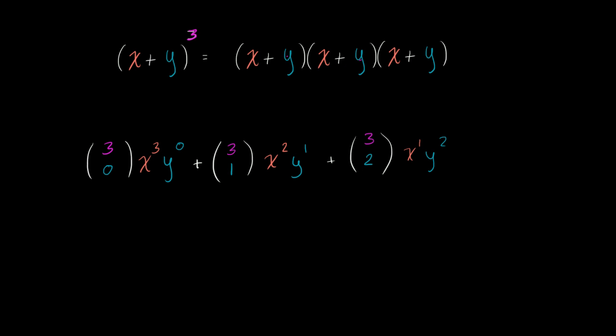And then finally, how many different ways from a set of three things, from three different things, so from each of these expressions, how many ways can you pick exactly three y's? Well, there's only one way to do it. You pick this y, this y, and that y. And so if you're picking three y's, that means you picked zero x's, and you have picked three y's. So that's why we're dealing with combinatorics here.